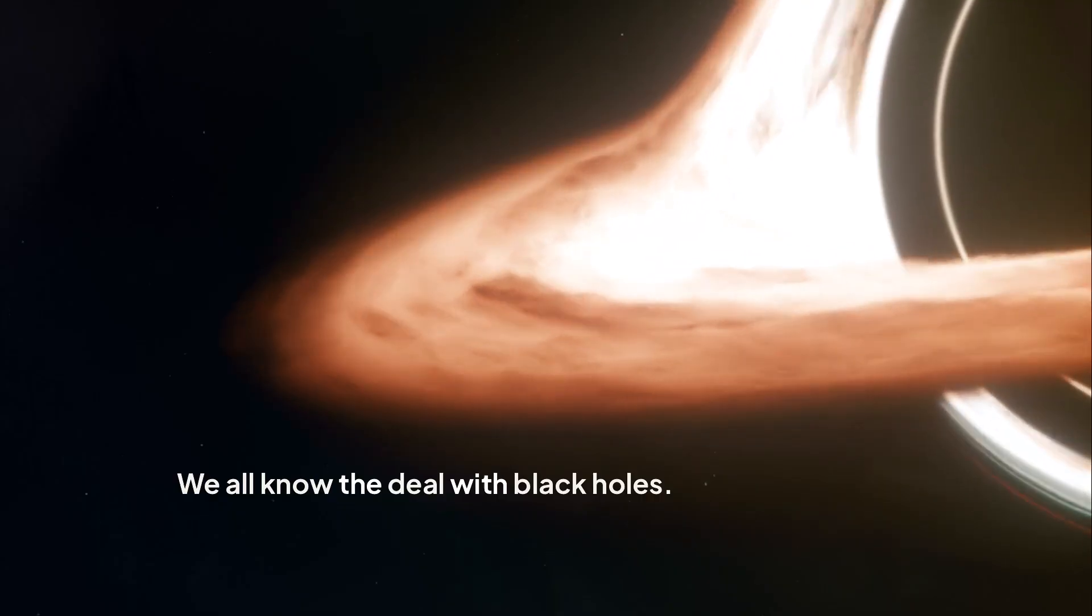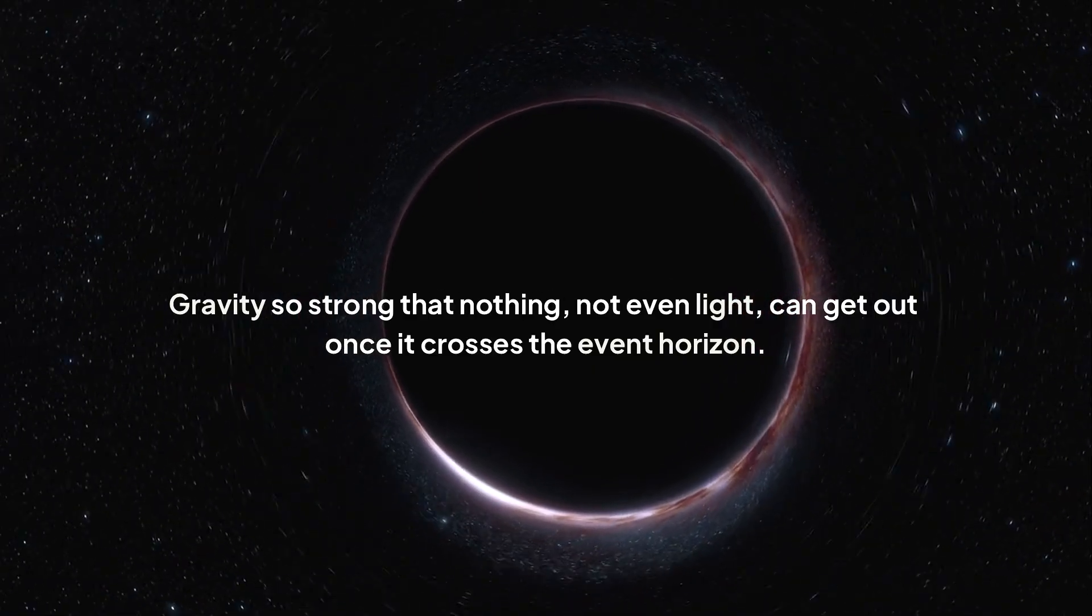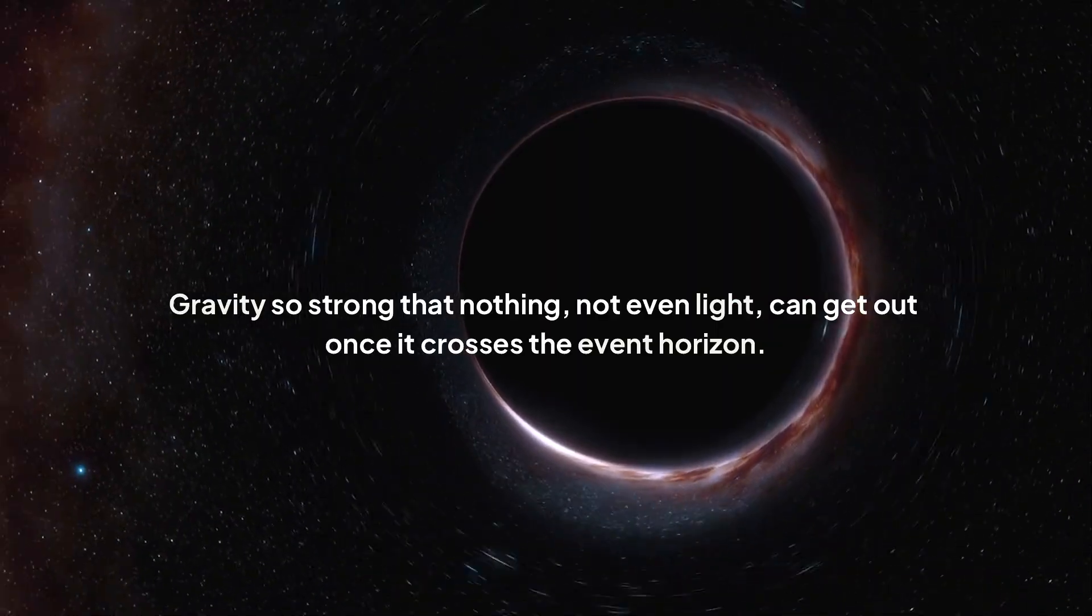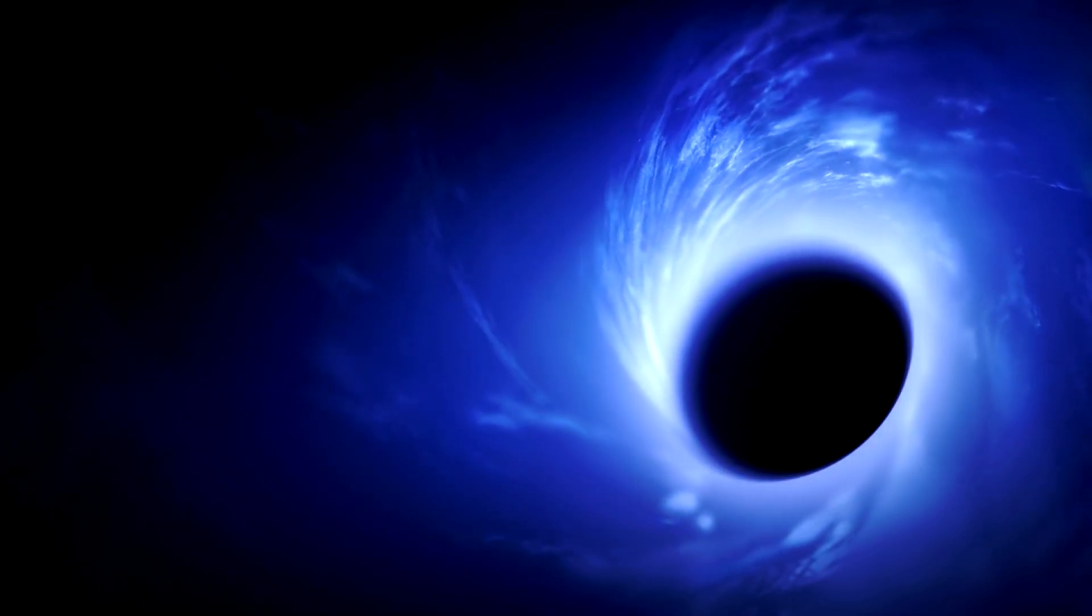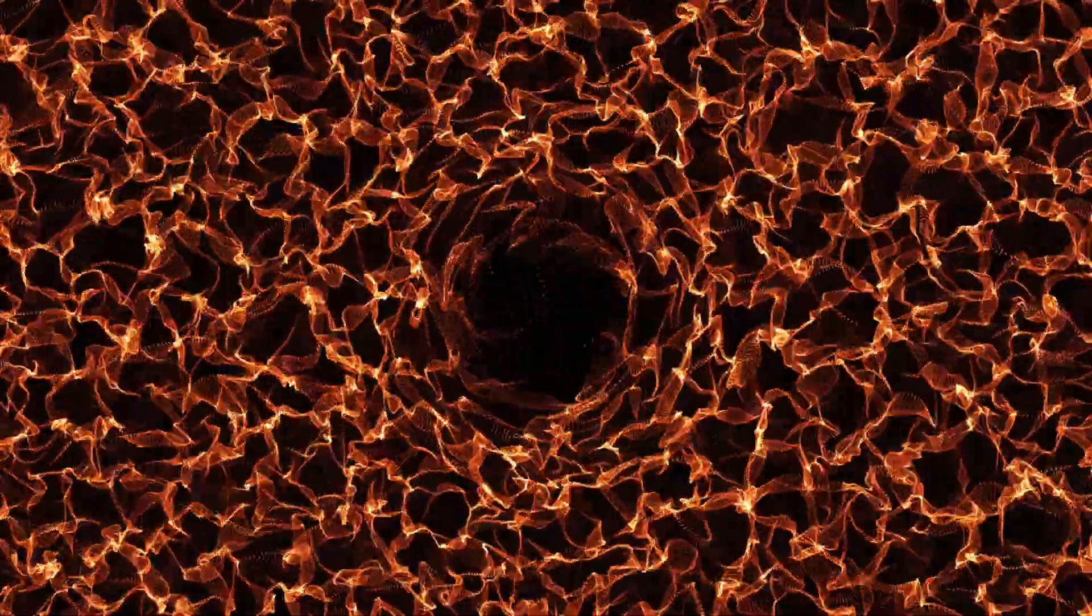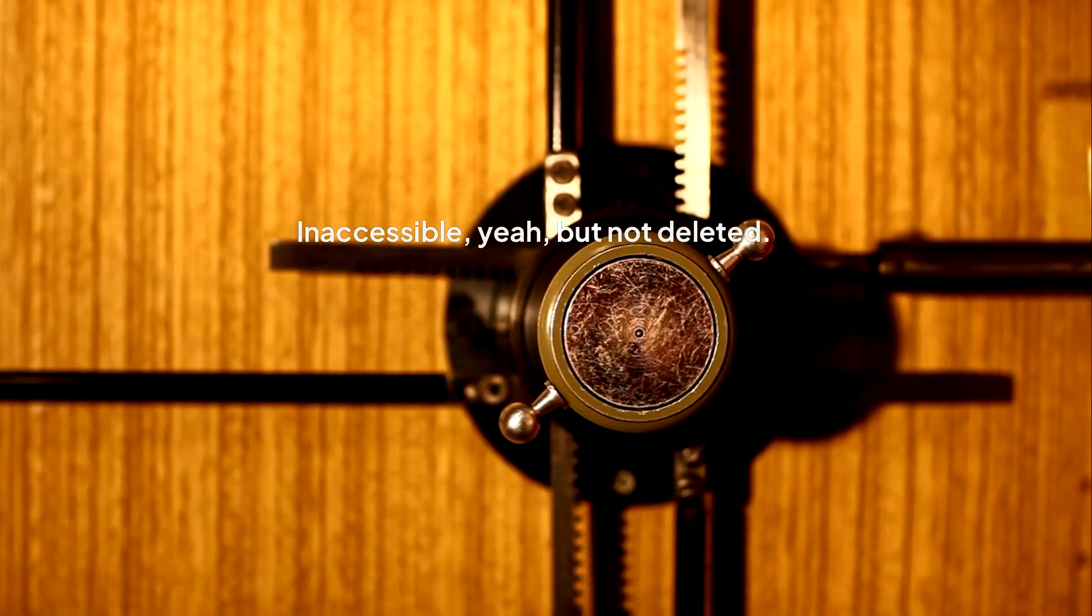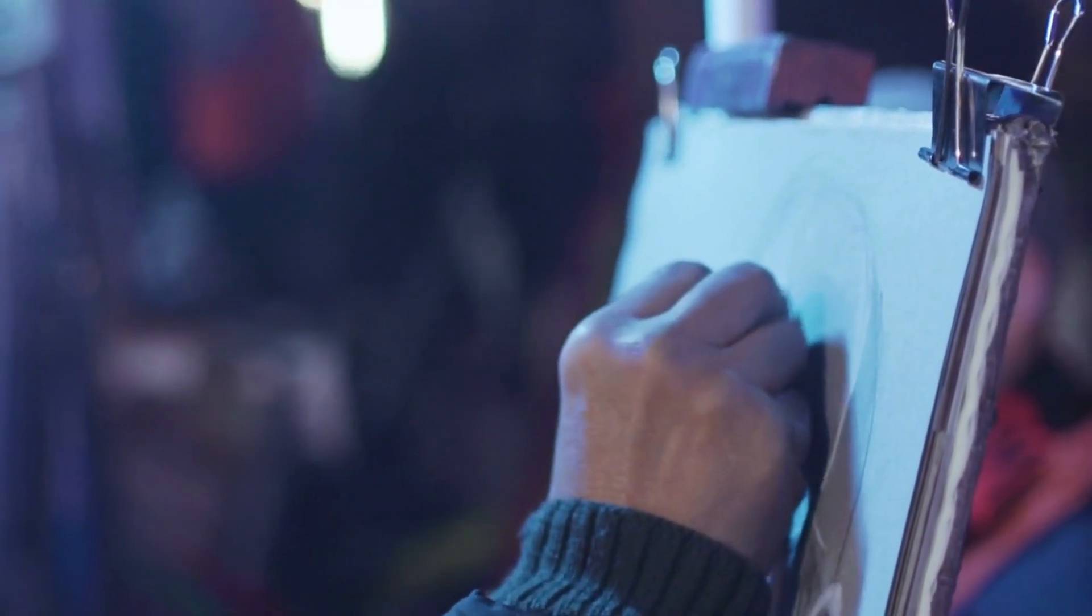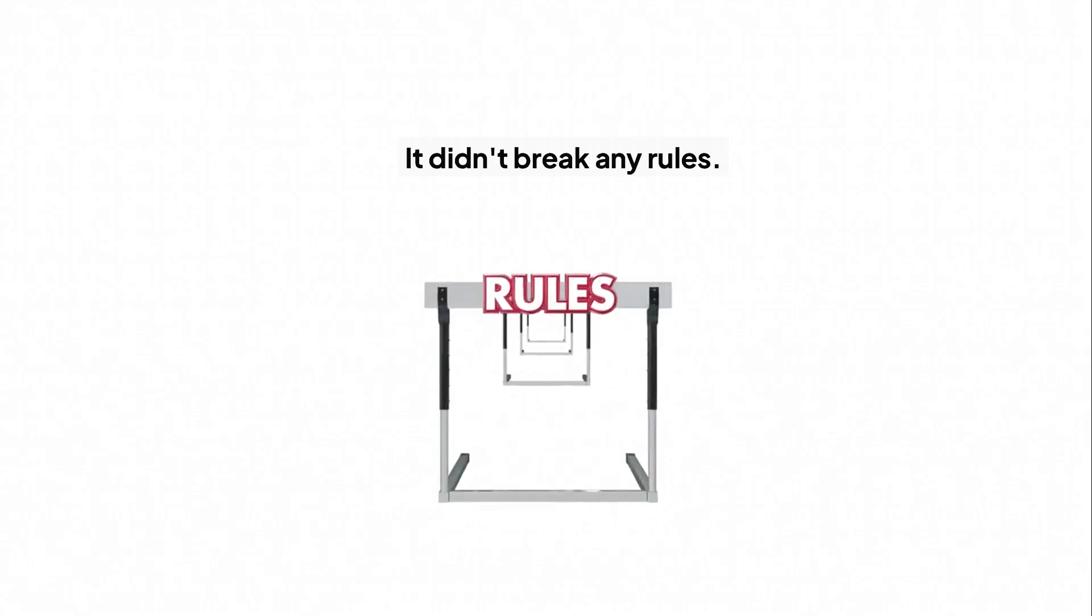We all know the deal with black holes. Gravity so strong that nothing, not even light, can get out once it crosses the event horizon. They're the ultimate cosmic prisons. This didn't seem to be a problem for the information law at first. Sure, if you threw an apple in, its information would be trapped inside, locked away forever. Inaccessible, yeah, but not deleted. The universe's total information was still there. Some of it was just in a place we could never, ever see. Everyone was pretty happy with this picture. It worked. It didn't break any rules.